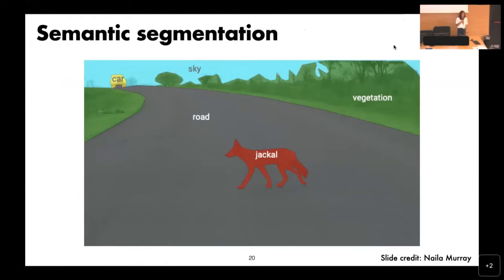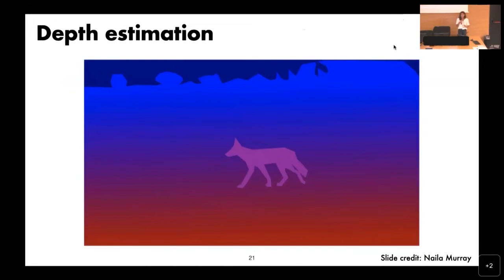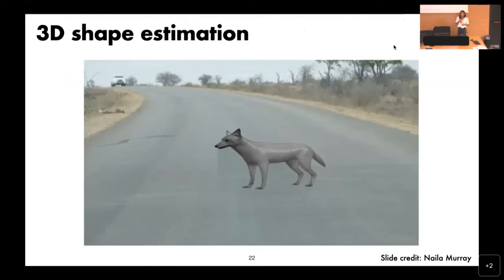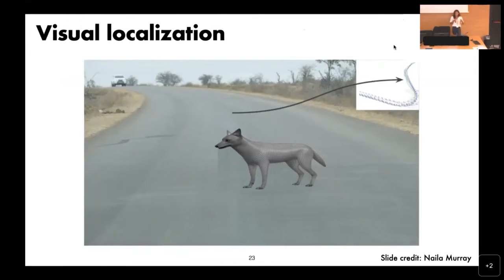Semantic segmentation: for every pixel, categorize it into some class — sky, road, vegetation — not just foreground objects but everything in the background. Depth estimation: for every pixel, estimate how far it is from the camera, giving a pseudo-3D or 2.5D representation — you don't have occluded regions, just the surface. 3D shape estimation involves putting a mesh or full surface around an object, either using a template 3D mesh or deforming it around the object. Finally, visual localization means putting a trajectory or localizing yourself in a 3D world.